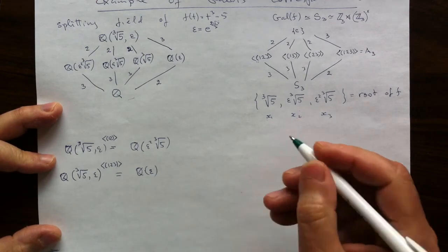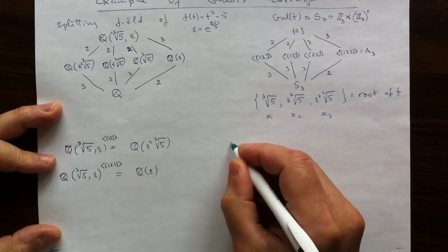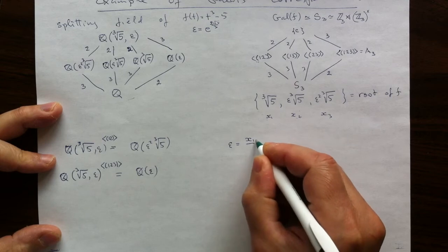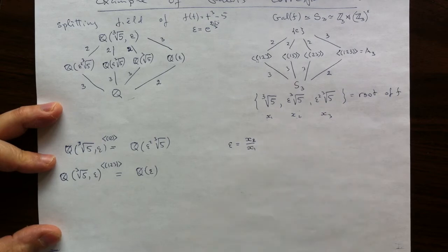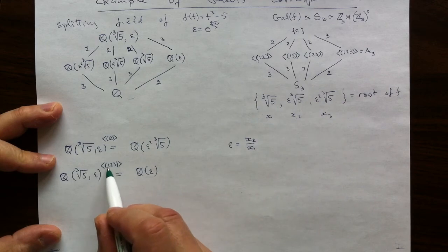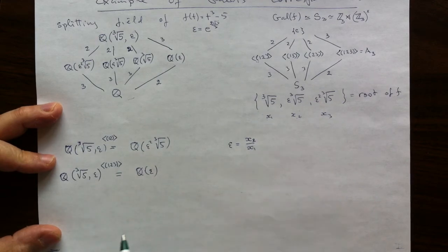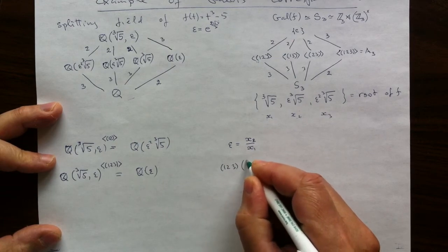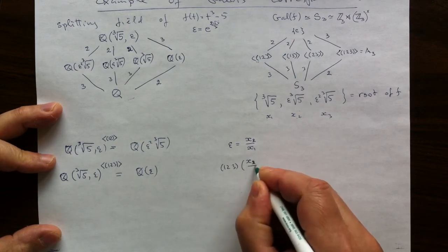So why is epsilon fixed? Well, let's remember what epsilon is. It's a ratio of, say, x2 and x1. And let's see what the three cycle does to this ratio.